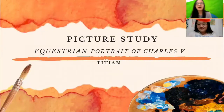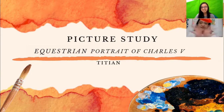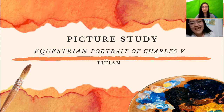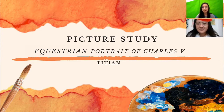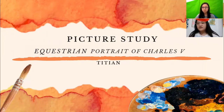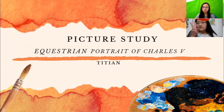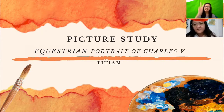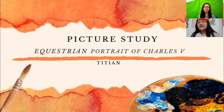Hello friends, hello Primary One and also hello Primary Four! It's time for our picture study again. Today we have a new painting. The title is 'Equestrian Portrait of Charles V' — the V means five, like first, second, third, fourth, fifth. This painting is made by the same painter — Titian!